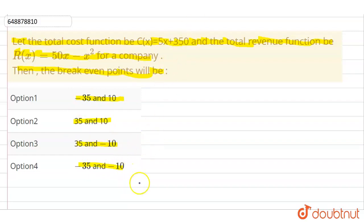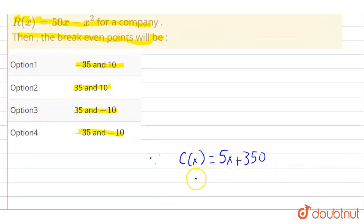So in this question, we have given the total cost function C(x) which equals 5x plus 350. Also, we have given R(x) that equals 50x minus x squared.